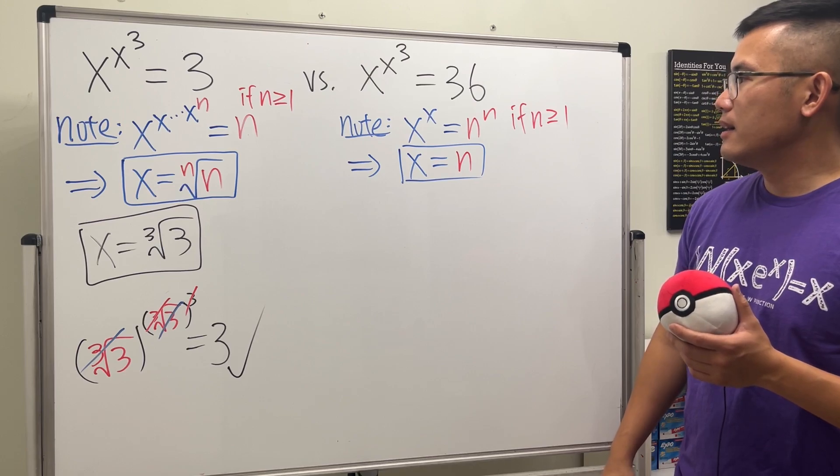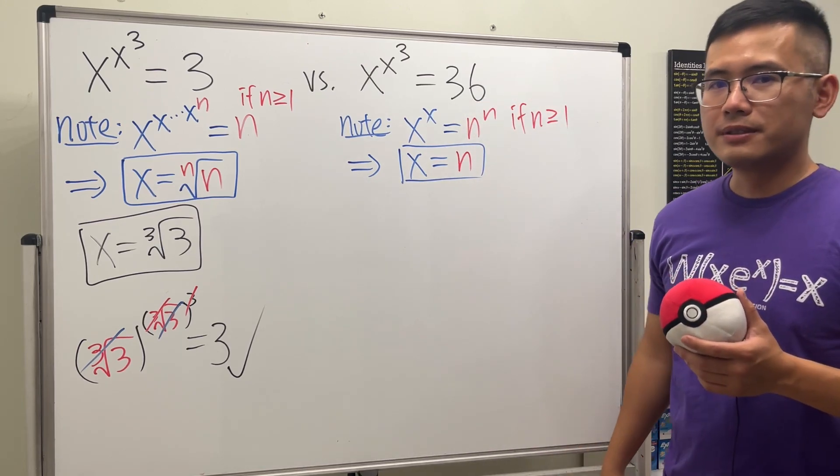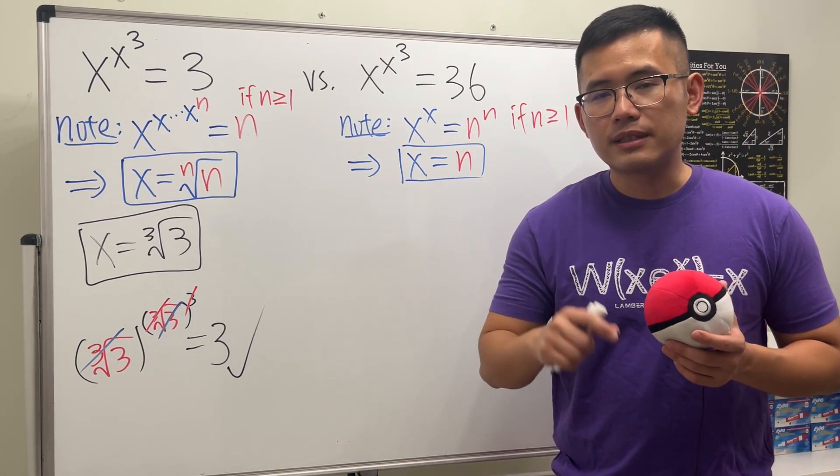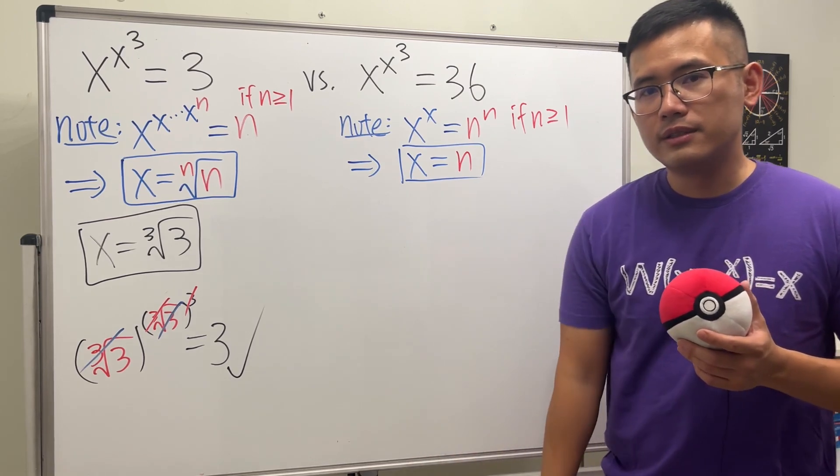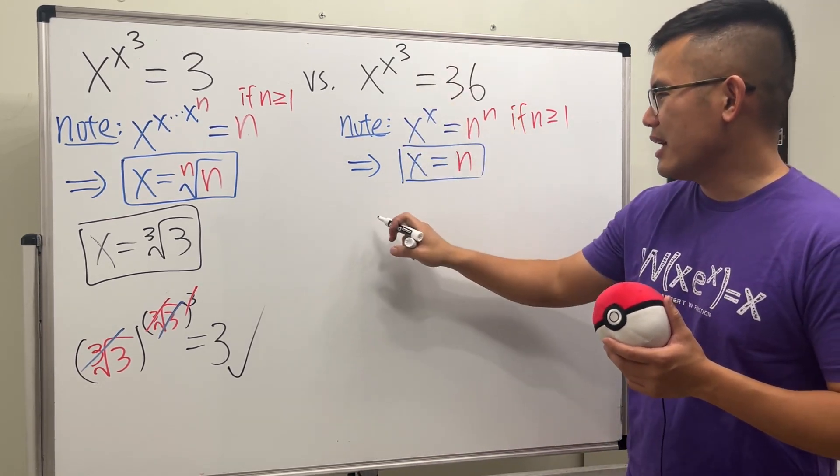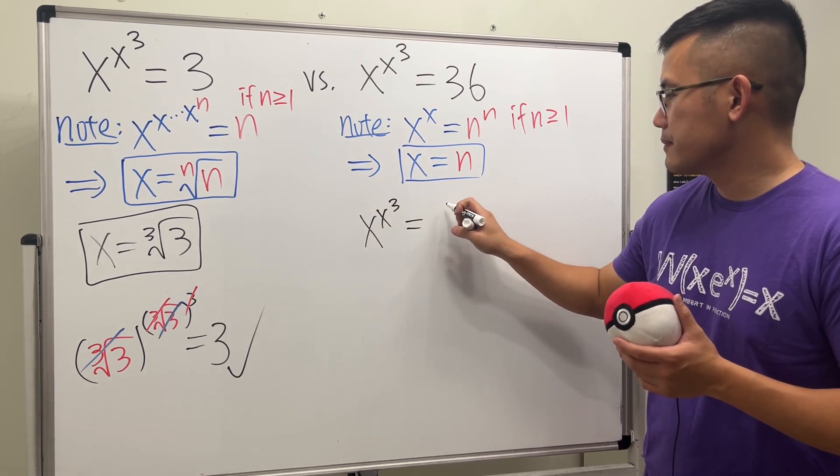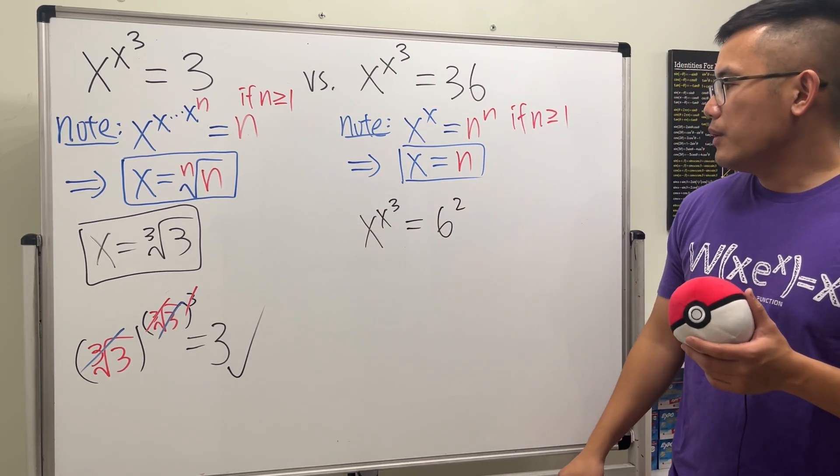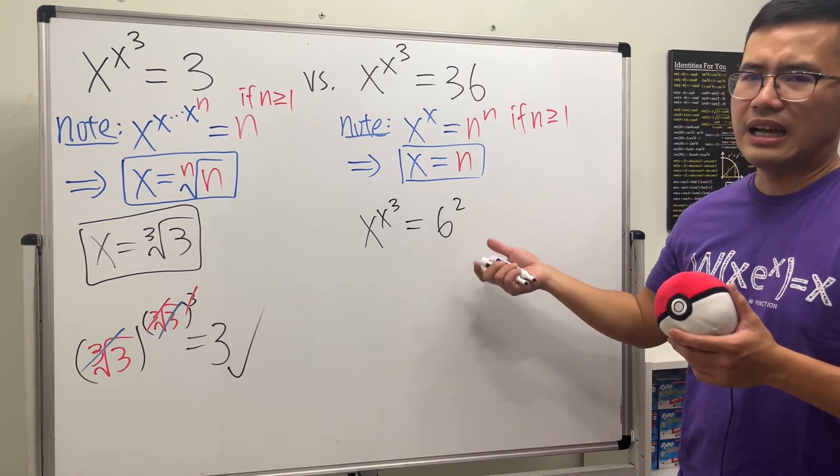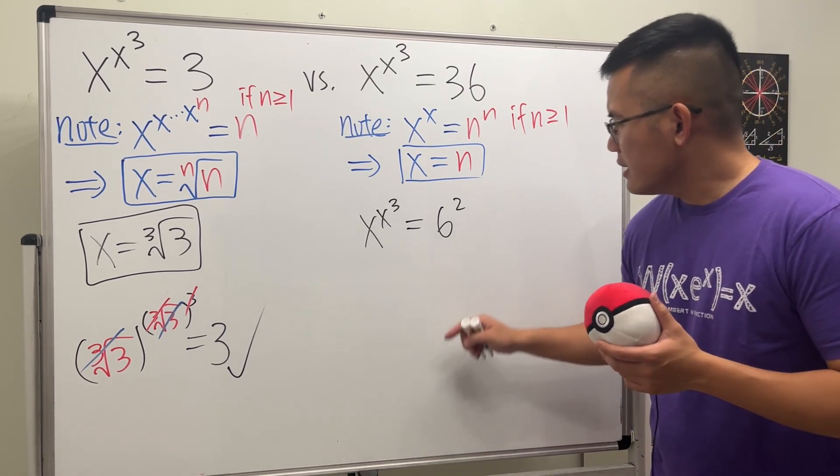Let's see how we can make this work. 36. Okay, what do we know about 36? 36 is the same as 6 times 6, so we can write it as 6 squared.